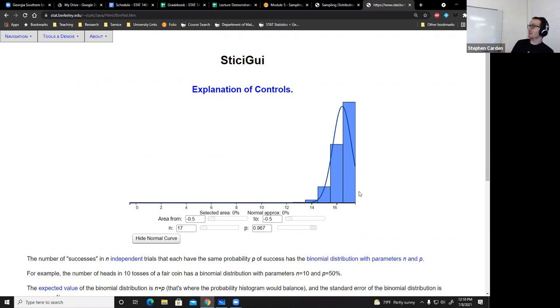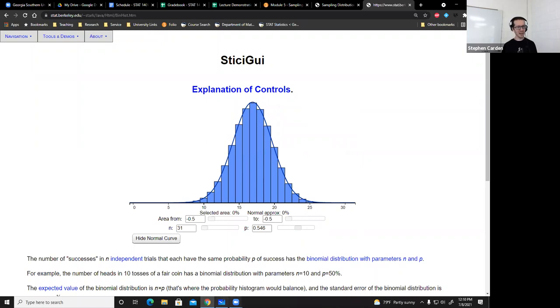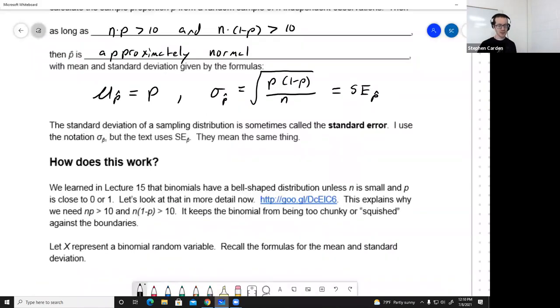It's even worse than it actually appears here, because the normal keeps on going. This graphic doesn't show it, but yeah, normals keep going on the whole number line. It's possible for the normal to be larger than 17, but binomial can't be. So there's a real mismatch between area under the curve and the heights of the bars. So how do we make sure that n is large enough and also that p is somewhere in the middle? And how do you balance those out? That's where these conditions come from. Keeps the binomial from being too chunky or too squished up against the boundaries.